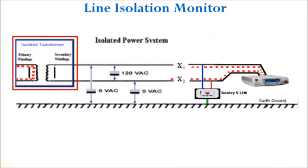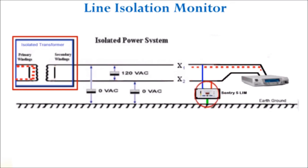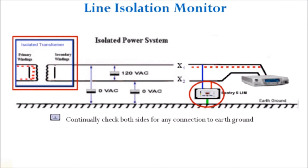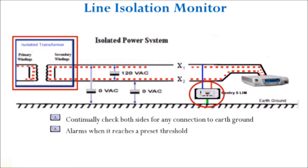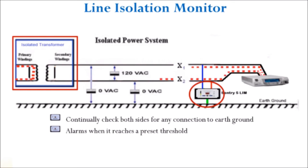In this diagram, you can see that the Sentry 5 is attached to both X1 and X2 so that it is continually checking both sides for any connection to earth ground. And if it should sense some leakage starting to creep in, it will alarm when it reaches a preset threshold. The Sentry 5 also has a built-in test circuit to exercise the alarm without adding to any leakage to earth ground.